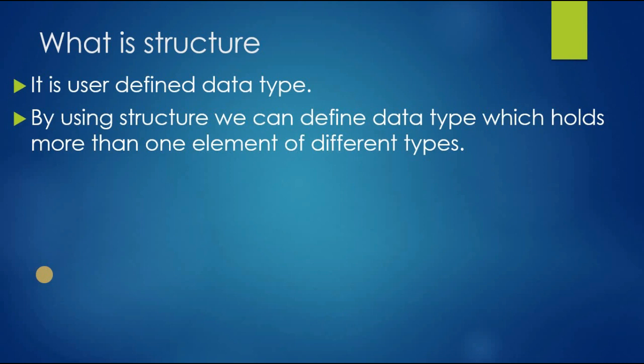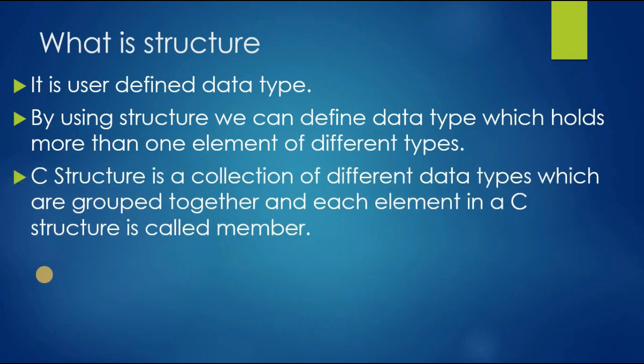In array we can define the same data types, but in a structure we can define different types of data types. C structure is a collection of different data types which are grouped together, and each element in a C structure is called a member.